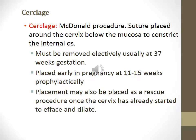Cerclage — the McDonald's procedure: a suture placed around the cervix below the mucosa to constrict the internal os must be removed electively, usually at 37 weeks gestation. It is placed early in the pregnancy, 11 to 15 weeks, prophylactically. Placement may also be done as a rescue procedure once the cervix has already started to efface and dilate. Bed rest is usually required for a few days. Avoid sexual activity until follow-up appointment. The woman should be advised to report signs and symptoms of ruptured membranes, strong contractions 5 minutes apart or less, severe perineal pressure, and the urge to push. This information is on page 322.